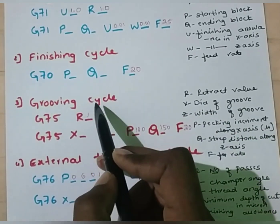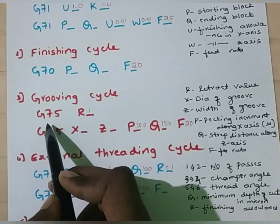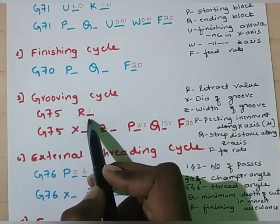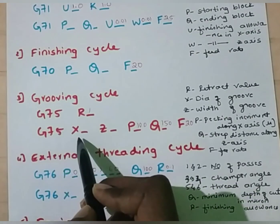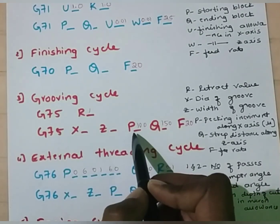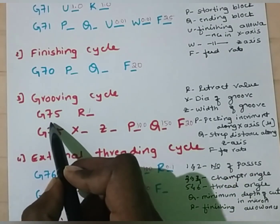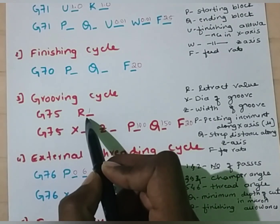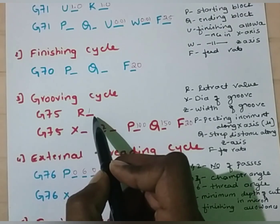Third one is the grooving cycle. For the grooving cycle, the syntax is G75, R-value. In the second line: G75, X-value, Z-value, P-value, Q, and F. G75 is nothing but grooving cycle. R is retract value — I am going to assume it as 1 mm, though you can assume 2 mm or 3 mm also.